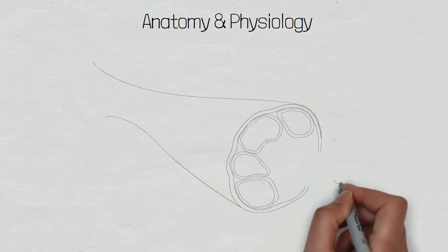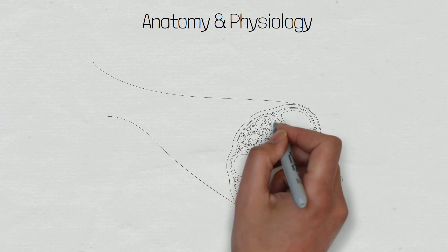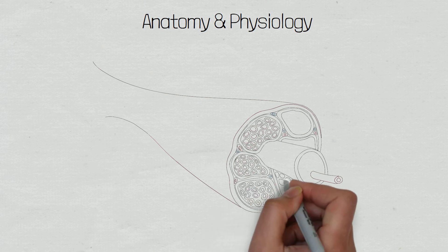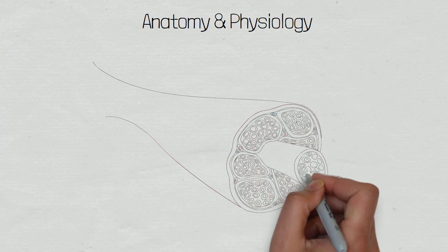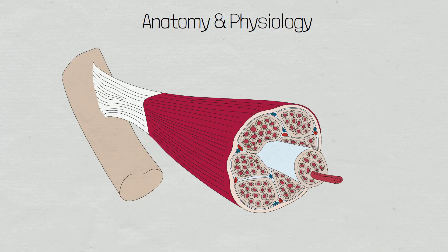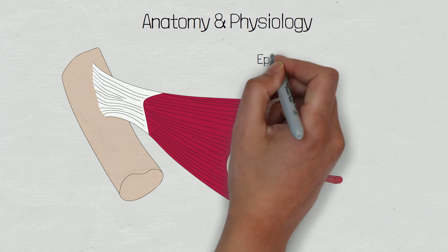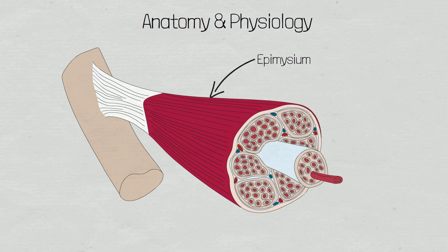Skeletal muscle within the human body is encased in a protective framework called a fascia, and the fascia consists of three layers. The outermost layer is the epimysium — epi meaning 'on' and mys meaning 'muscle'. It is a layer of dense irregular connective tissue which ensheaths the entire muscle and tapers at the end to form a tendon that allows for movement of a joint.